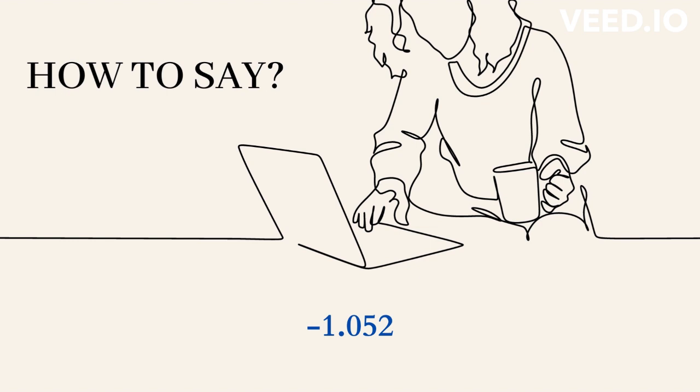You would say minus 1.052. You need to remember that in English when you say the number that comes after the decimal point, you say each number individually. For example, you would say the number 14.315, 14 point 3 1 5.